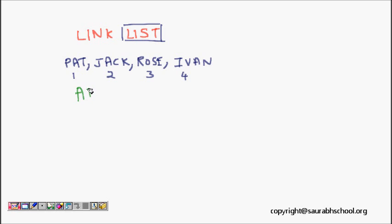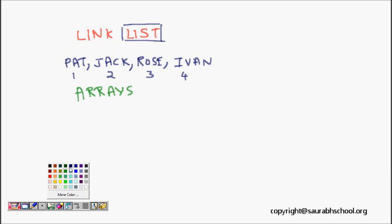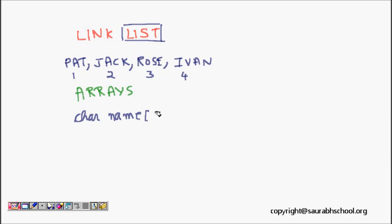Now one can ask: we have already used arrays for that. That's a good question. Pat, Jack, Rose, and Ivan are all character arrays. You can define them as a char array where the name is not more than 20 characters, making it a two-dimensional array.